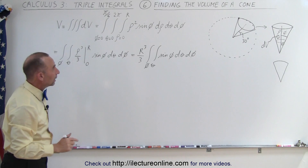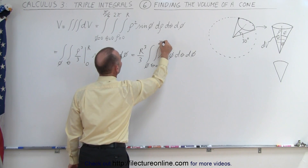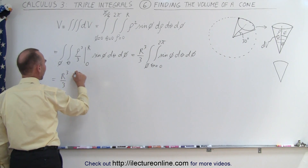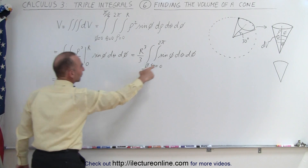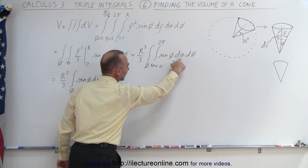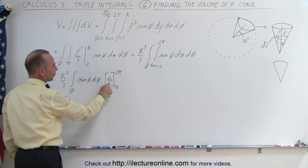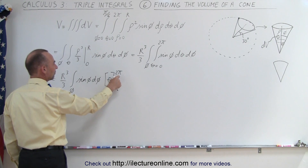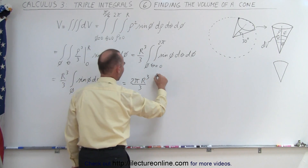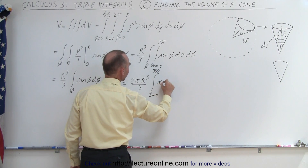Our next integral: we're now going to integrate over the angle theta all the way around 360 degrees around the cone, from theta equals zero to theta equals two pi. That gives us r cubed over three times the single integral left over phi, with sine of phi d phi inside. When we integrate d theta, we get theta evaluated from zero to two pi. Plugging in the upper limit gives two pi, the lower limit gives zero, so the contributing factor is two pi. This becomes two pi times r cubed over three, times the single integral from phi equals zero to pi over six of sine of phi d phi.